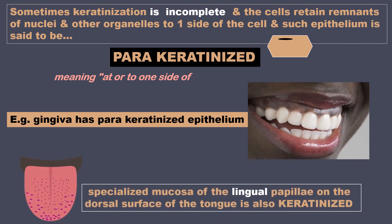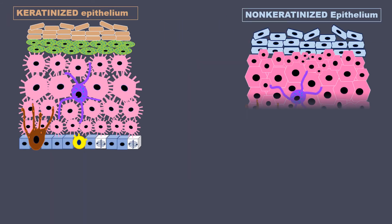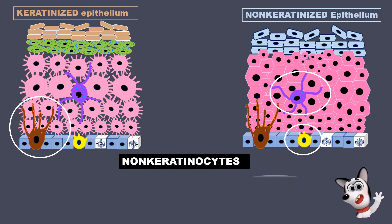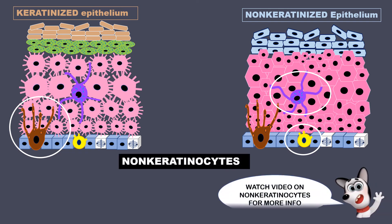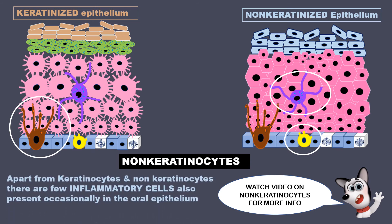The specialized mucosa on the lingual papillae on the dorsal surface of the tongue is also keratinized. In both keratinized and non-keratinized epithelium, there are a few cells common to both — these are the non-keratinocytes. Apart from keratinocytes and non-keratinocytes, a few inflammatory cells are also occasionally present in the oral epithelium.